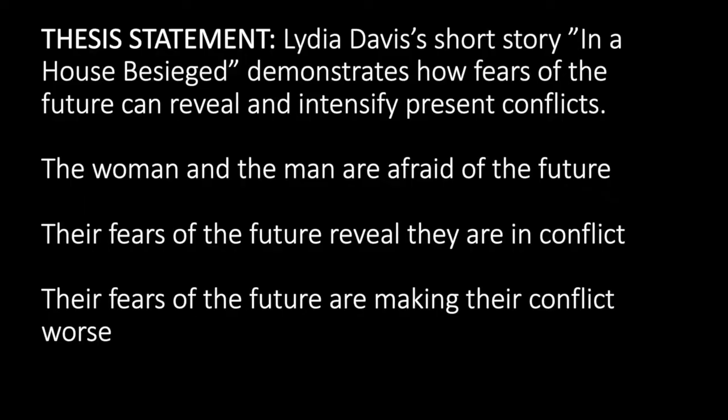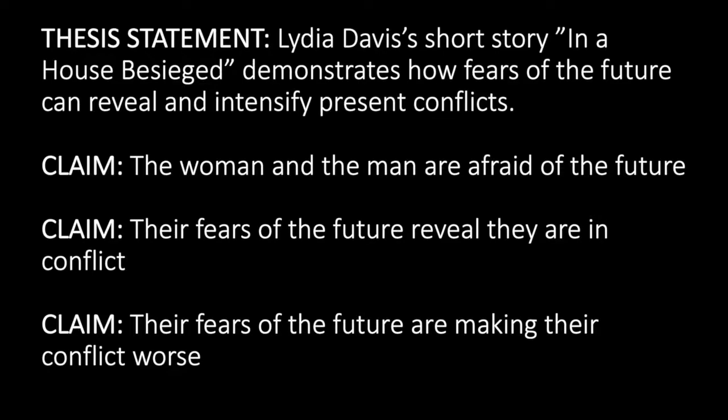To make that big argument, my essay is going to have to make three smaller arguments: that the woman and the man are afraid of the future, that their fears of the future reveal that they are in conflict, and that their fears of the future are also making their conflict worse. Those three smaller arguments will be the essay's claims. An essay's thesis statement should essentially tell your reader what your claims are going to be, but your thesis statement will also tell you what your claims are going to be. After you come up with a thesis statement, or a rough draft of a thesis statement, you will see what parts of that thesis statement you are going to have to argue in the claims in the body of your essay. Basically, any remark in your thesis statement that would not be immediately evident to anyone who read the story will have to be argued as a claim in the body of your essay.